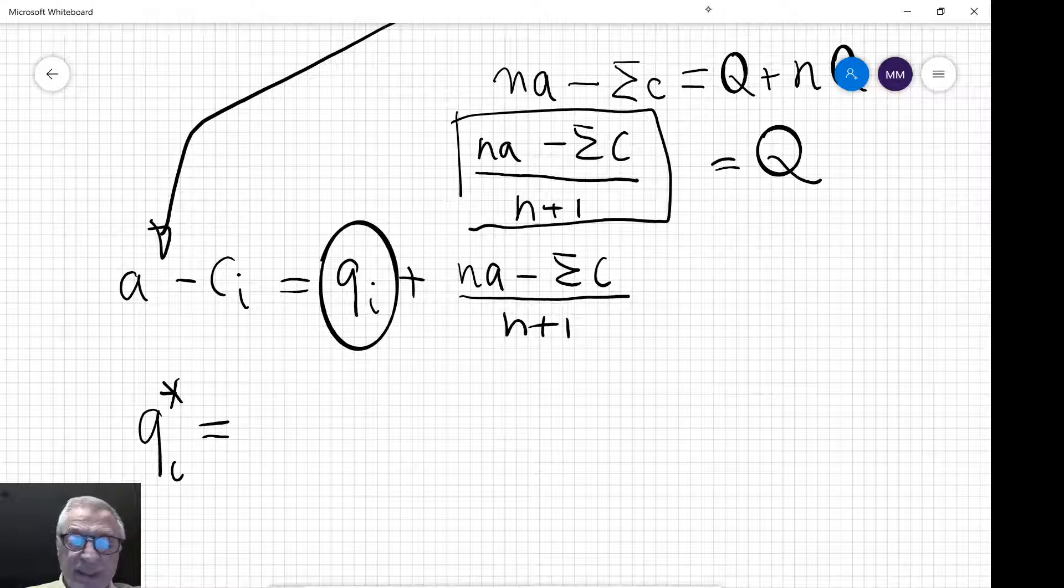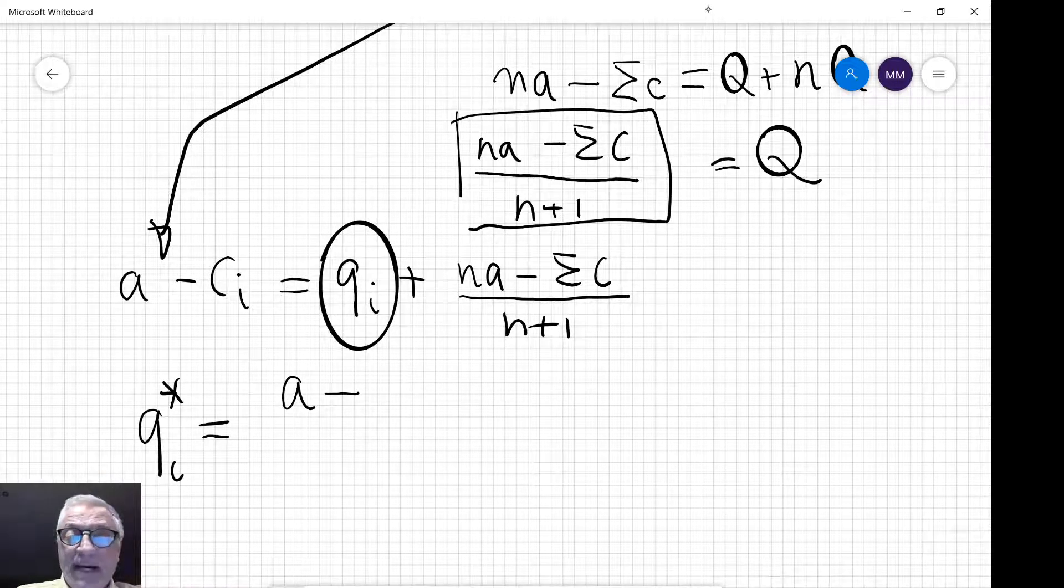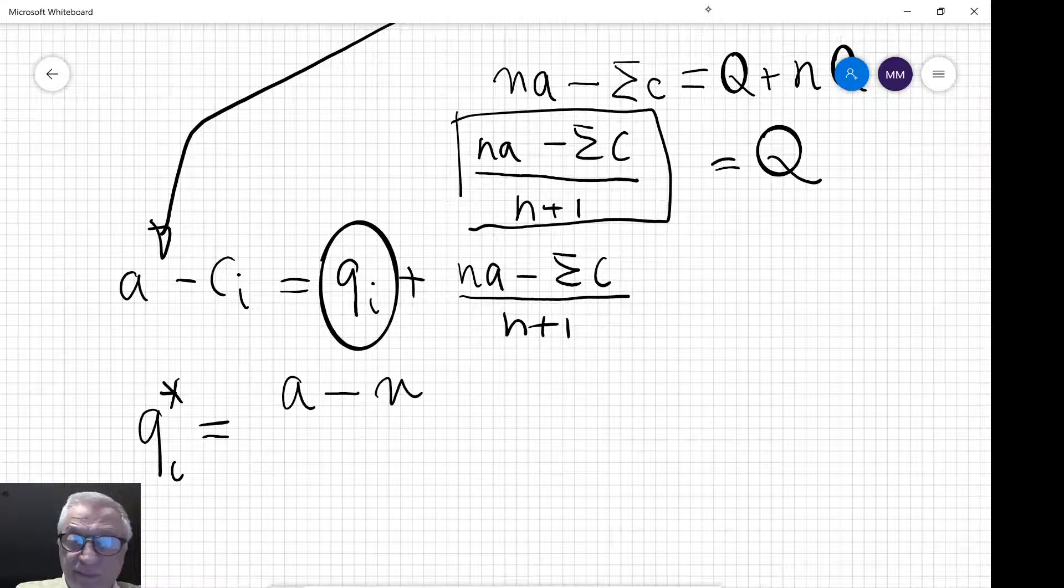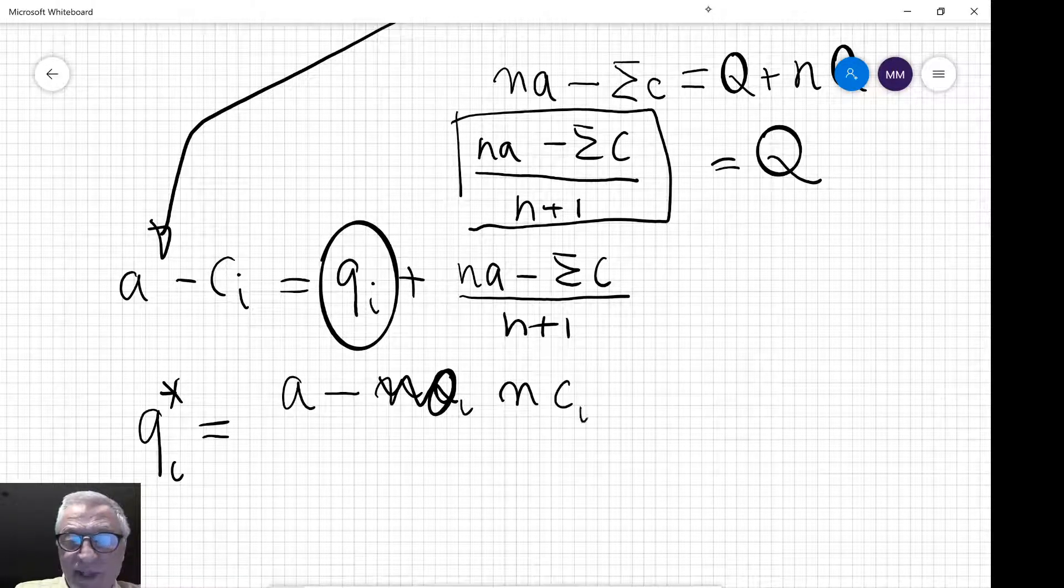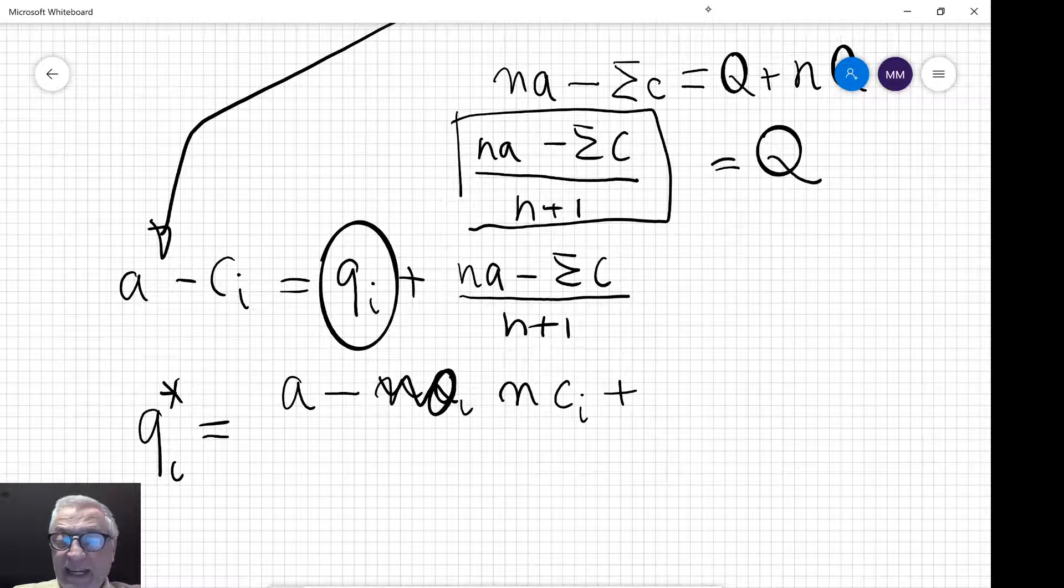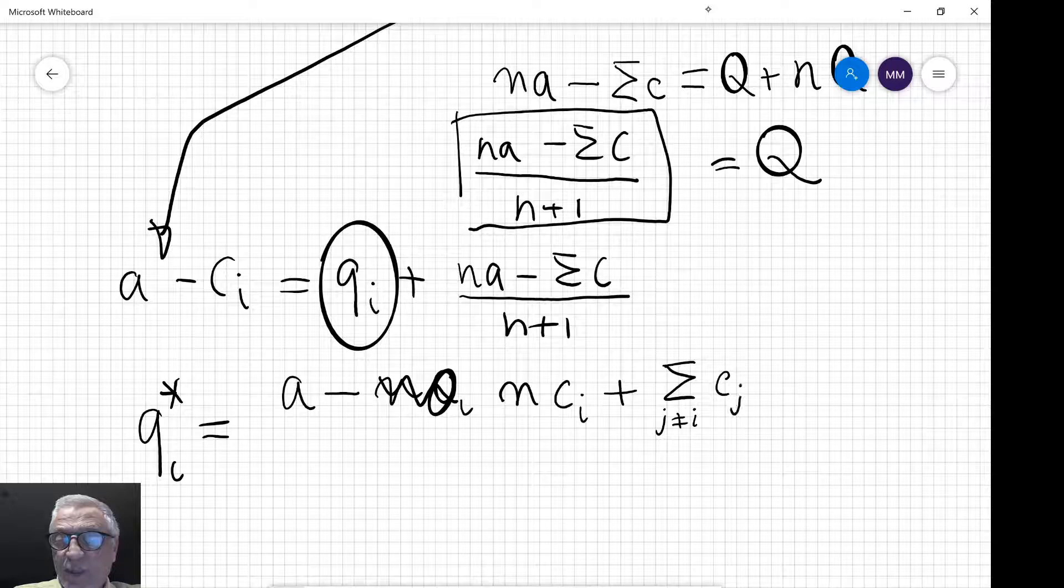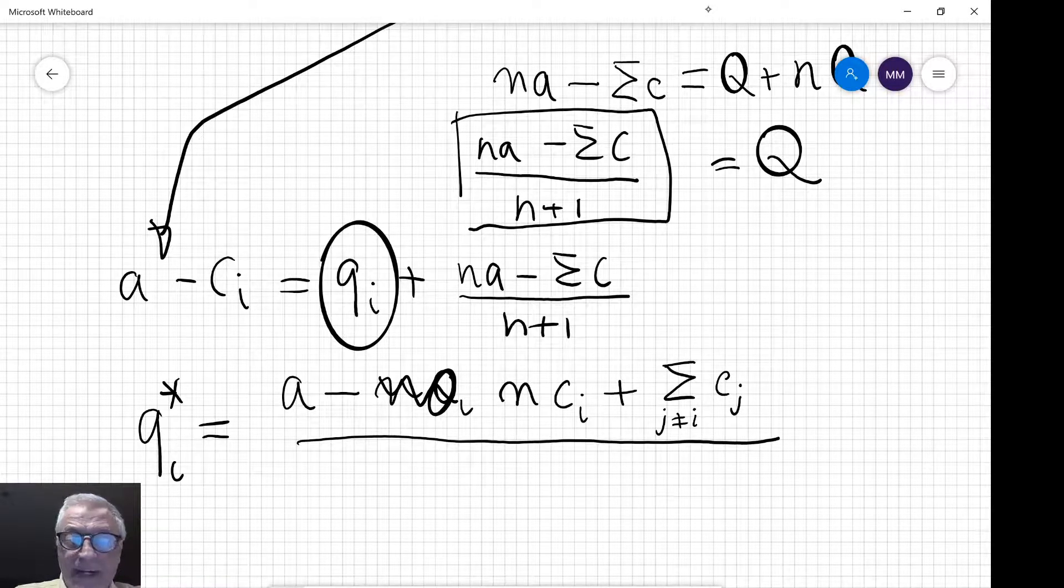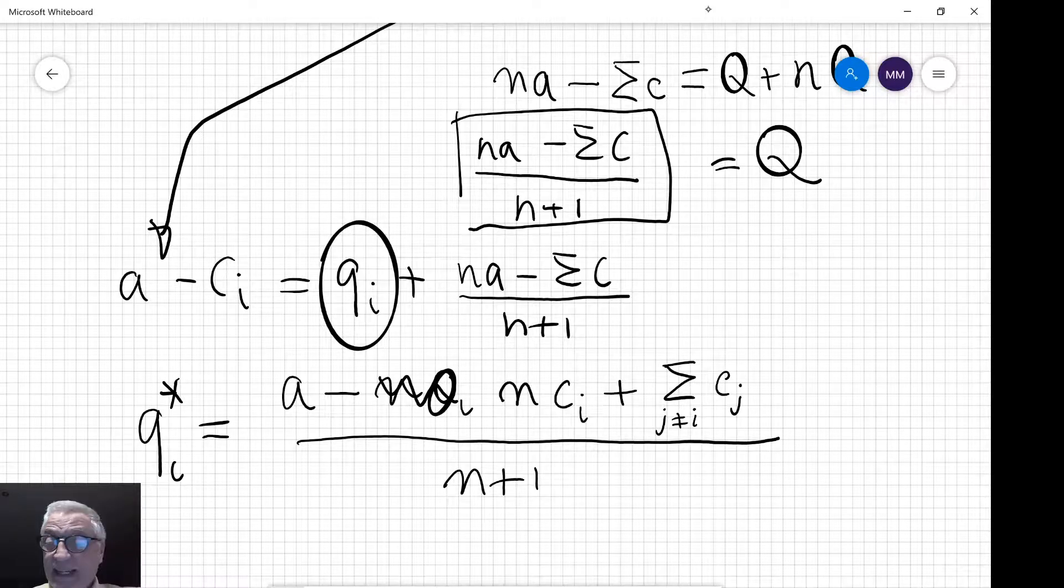...the intercept minus the number of firms in the industry times the marginal cost of the firm in question plus the sum of everybody else's marginal cost, so if I put j different from i and sum all the j's, divided by n plus 1.